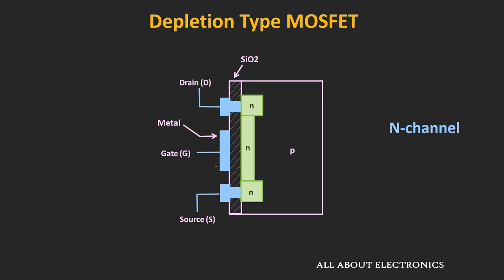The gate terminal is also connected through a metallic contact. But there is no direct connection between the N-channel and the gate terminal. The gate terminal is isolated from the channel using the SiO2 layer. The structure of this MOSFET consists of the metallic contacts for the drain, gate, and source terminals, then this insulating layer and the conducting channel made up of semiconductor material. That is why this MOSFET is known as the metal oxide semiconductor field effect transistor.